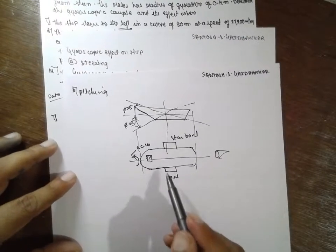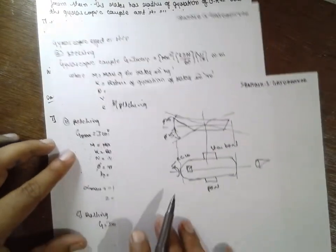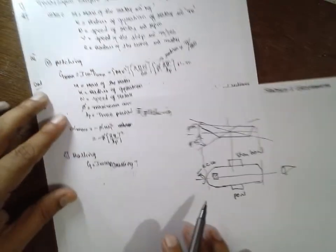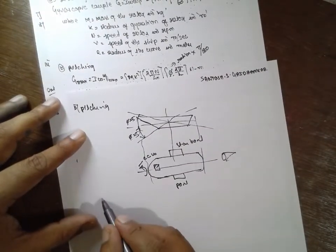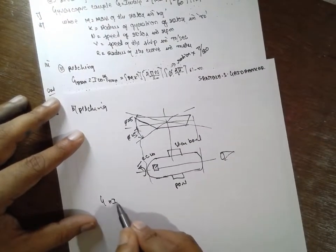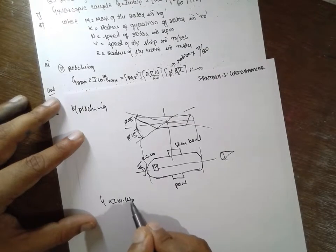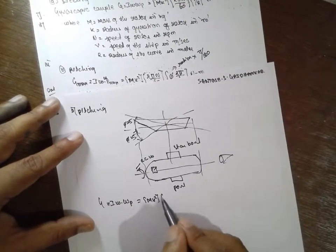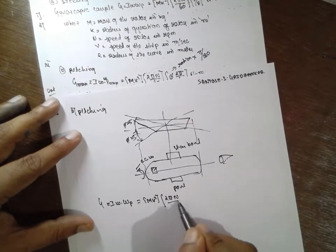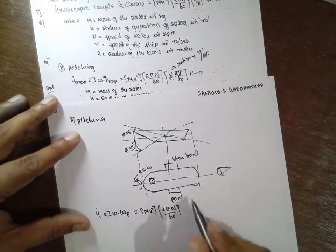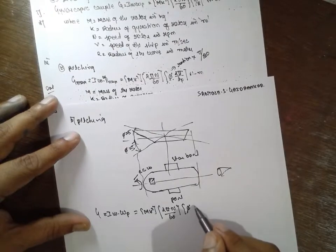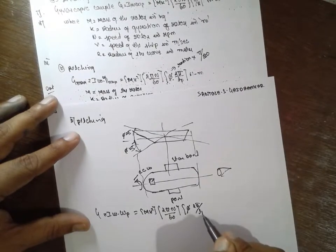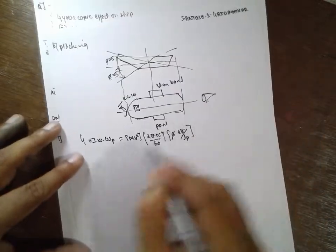Now pitching is occurring. What is the formula for pitching? You have to find out the gyroscopic effect. G is equal to I omega omega P max, or m k square, 2 pi n divided by 60, phi, 2 pi by tp, n divided by 180.